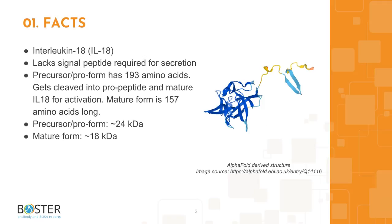High levels of IL-18 are detected in patients with severe inflammatory disorders and potentially fatal reactions characterized by a cytokine storm. The precursor of interleukin-18 is 193 amino acids long and runs about 24 kilodaltons on western blot, while the mature form is 157 amino acids long and runs about 18 kilodaltons on western blot.